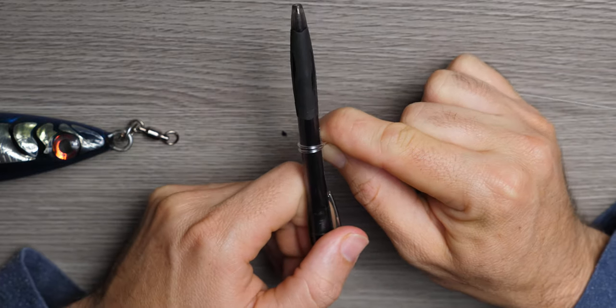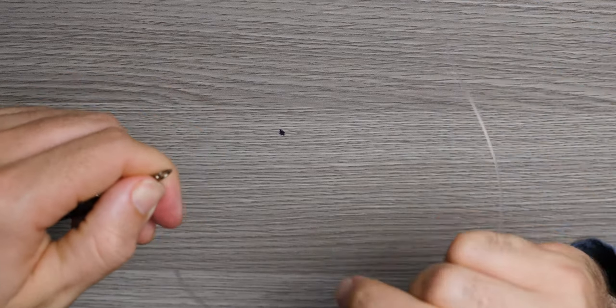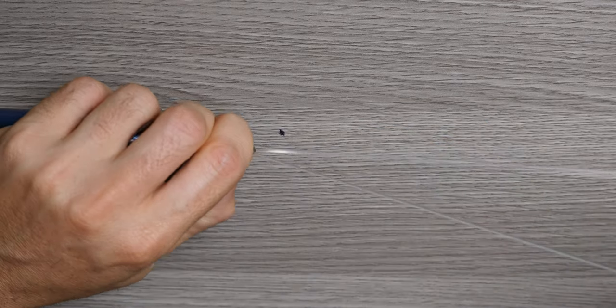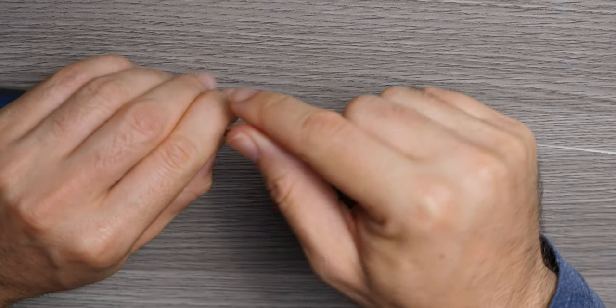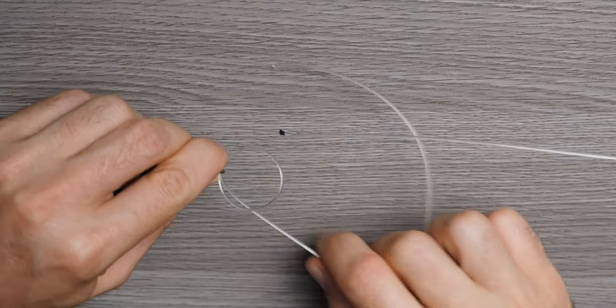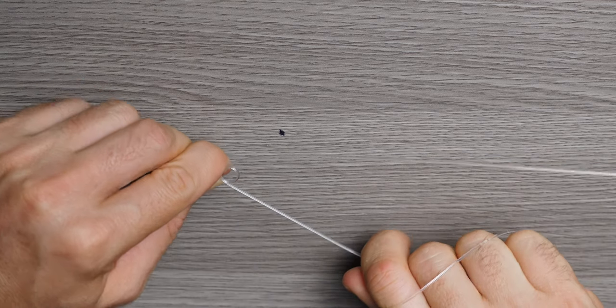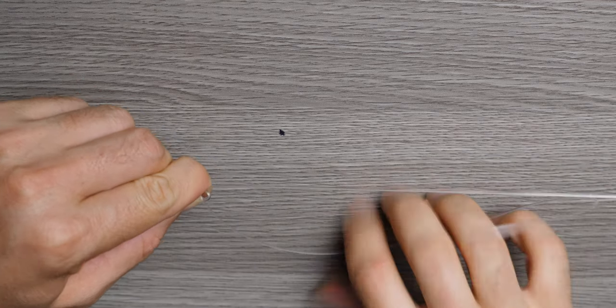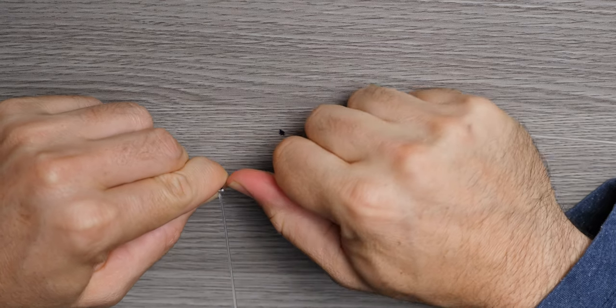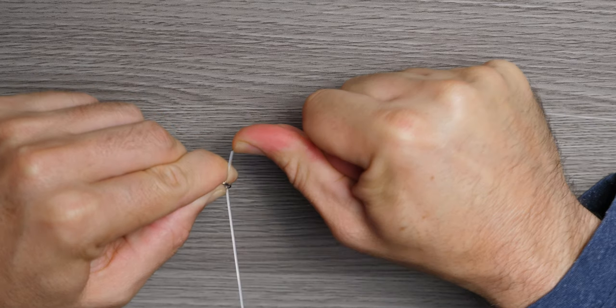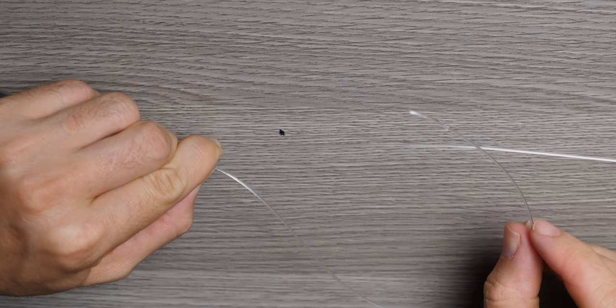Alright, moving on. So we're back at step one. I'm going to repeat the same thing I just said. You're going to go through the eye once, you're going to go through the eye of the swivel twice, and you're going to make sure that pulls down nice and tightly, neat, next to each other. We'll pull it down really tight here so it holds some memory.